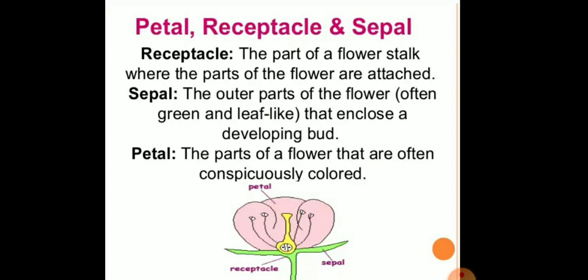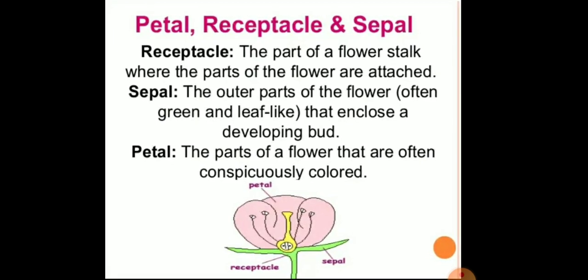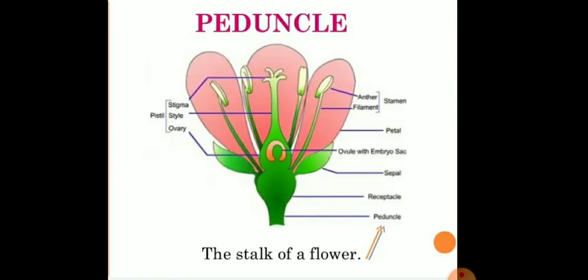The next part is the petals, which are the parts of the flower that are often colourful. You can see here the different parts of a flower: the pistil, stamen, sepals, petals, and peduncle — which means the stalk of the flower — are all present.